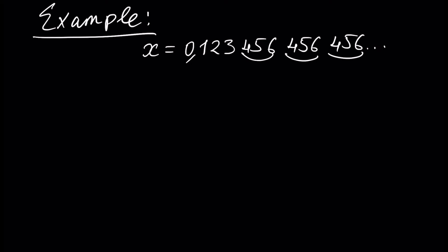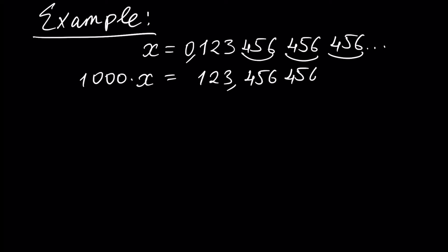For this, we multiply both sides of this equation by 1000, and we will have 1000x equal to 123.456456456 and so on. When we multiply by 1000, our floating point moves from this place to this place.